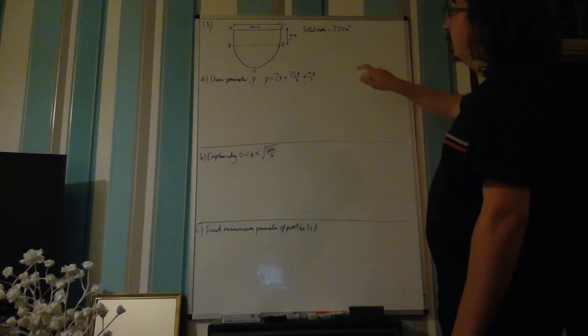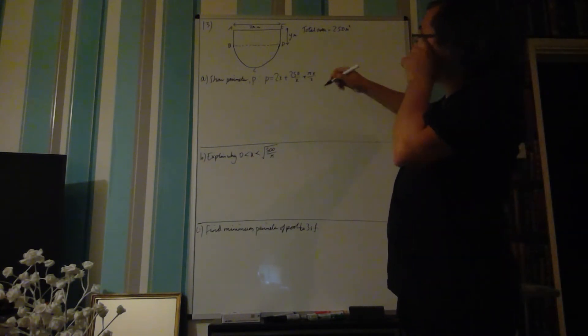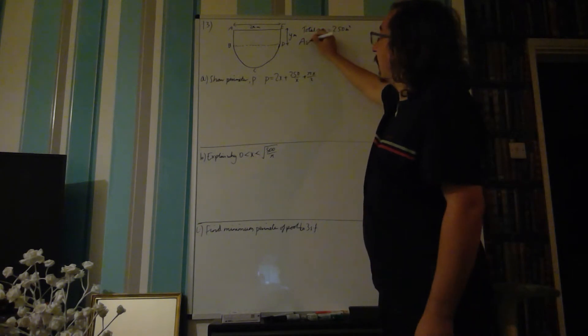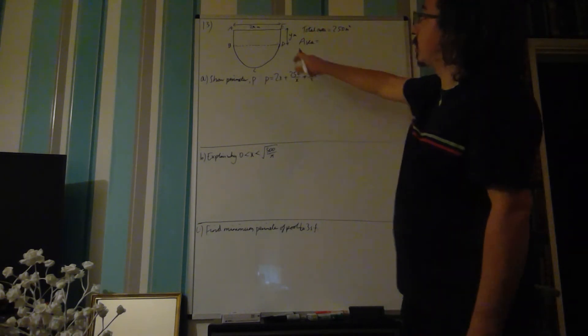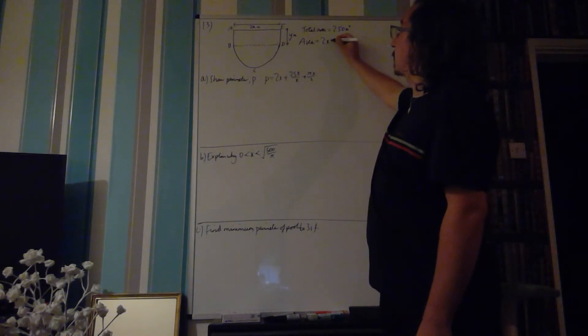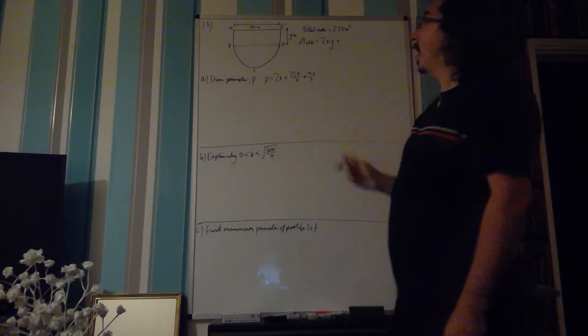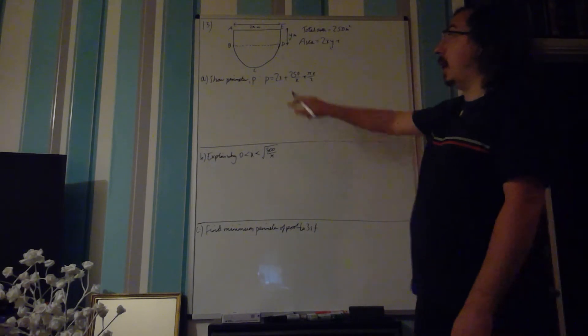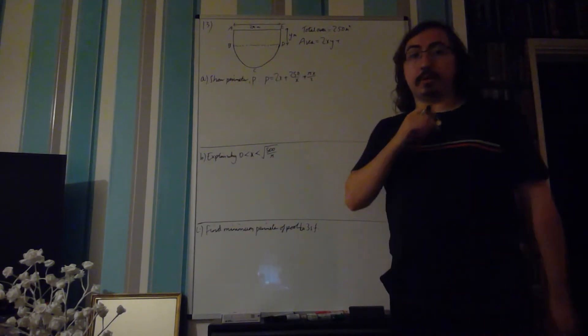If we look at the area, we can say for the area, we can take our area of our rectangle, which would just be simply 2x times y, and we can add on the area of this semicircle.